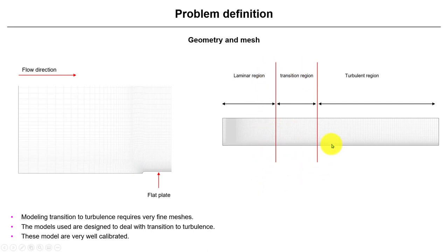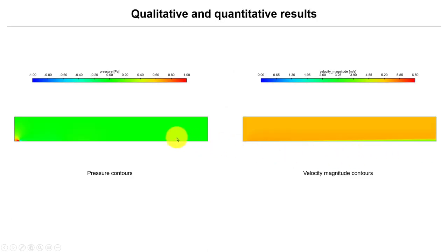We're going to see a laminar region, a transition region, and then the fully turbulent region. After running the solution, which by the way is economical even though the mesh is very fine, we're going to run steady.